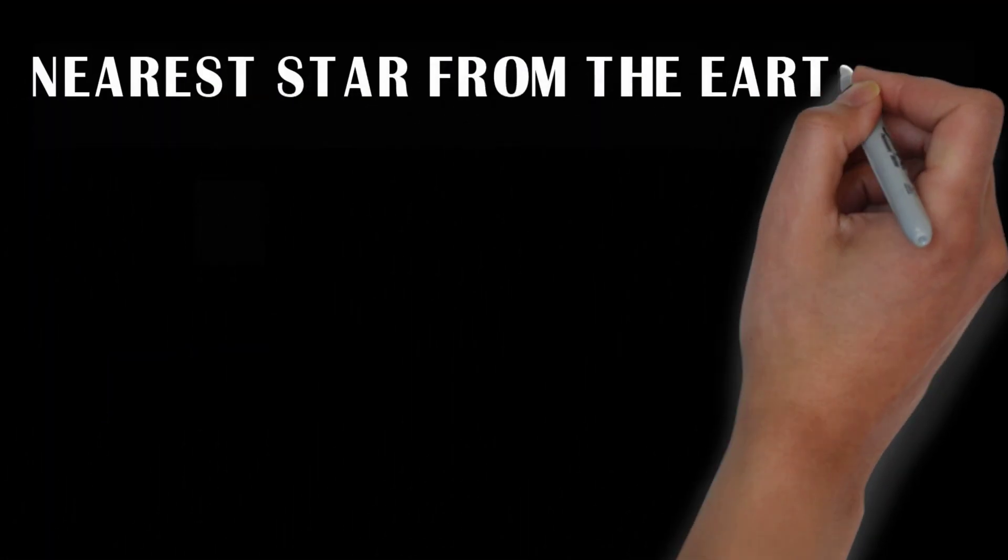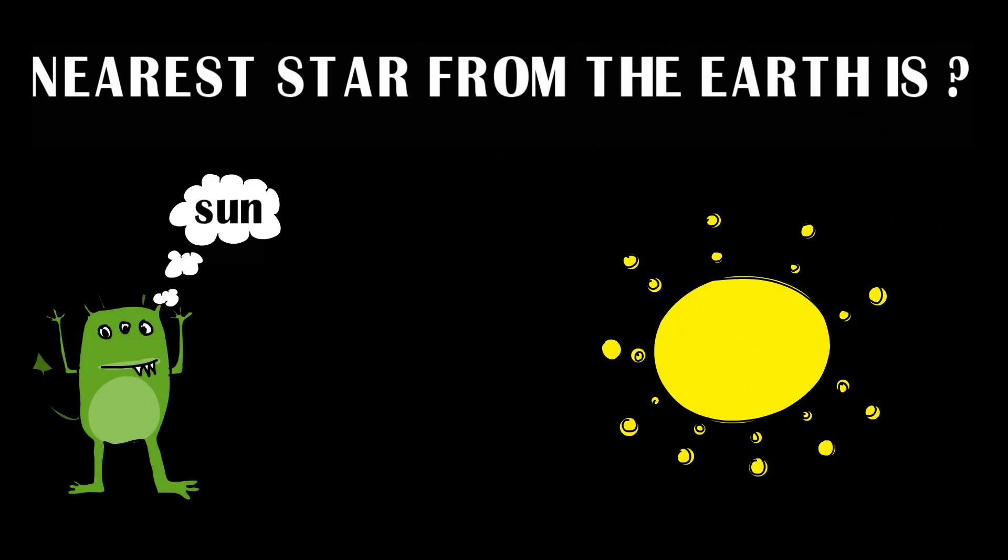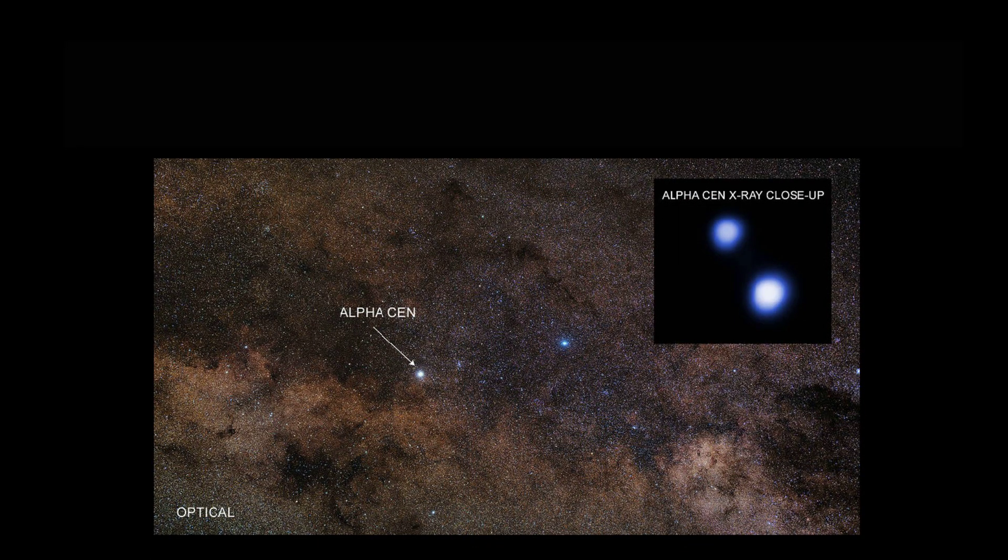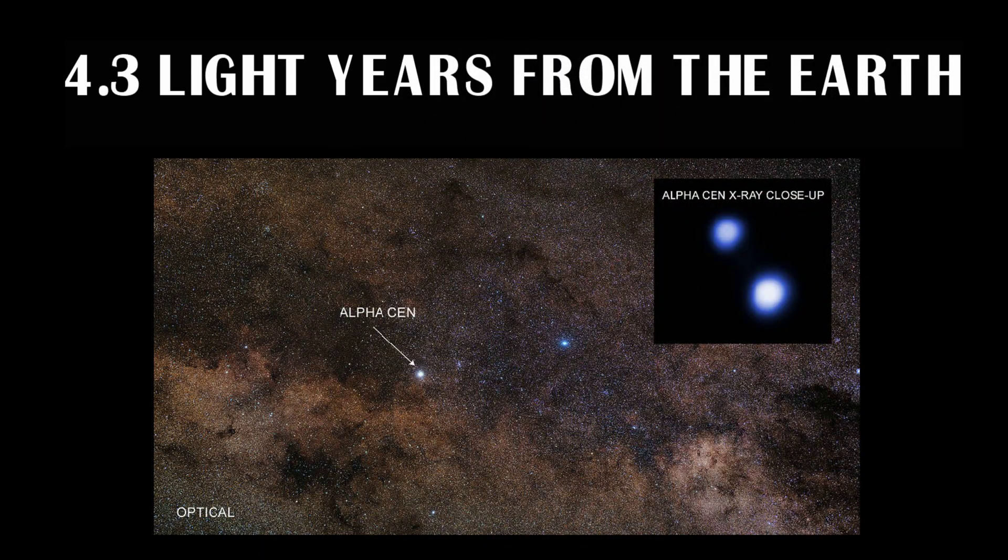The nearest star from the earth is Sun. Of course Sun, but we are not talking about Sun, so keep it aside. When it comes to the star, it is Alpha Centauri A at a distance of 4.3 light years from the earth.